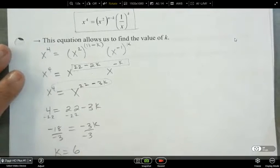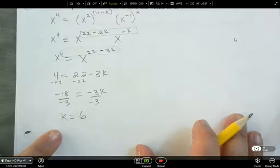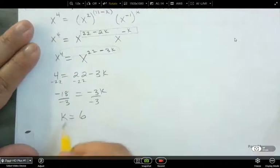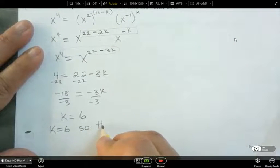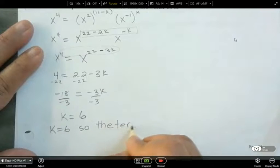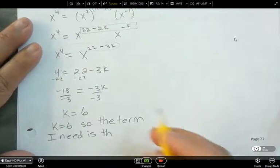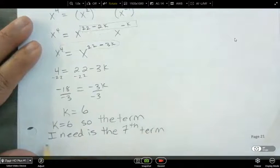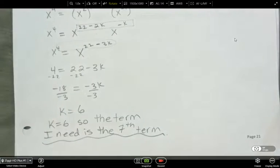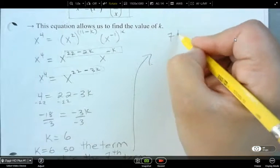So which term actually contains x to the power of 4 when k is equal to 6. k is equal to 6. So the term that I'm looking for is the k plus first term, right? The seventh term. So now I'm going to do that up here. And I'm going to look for the seventh term.